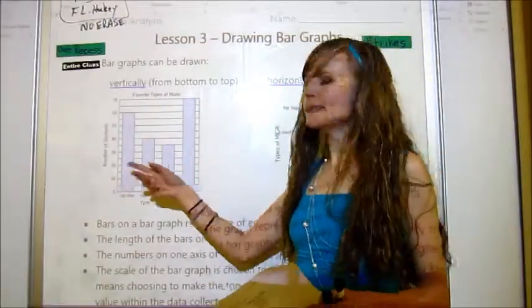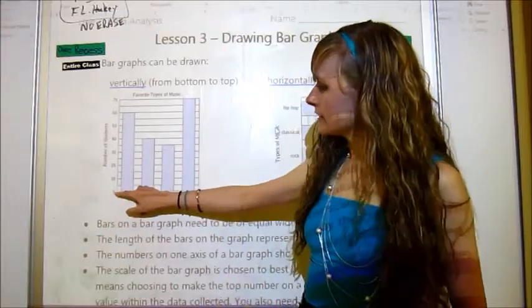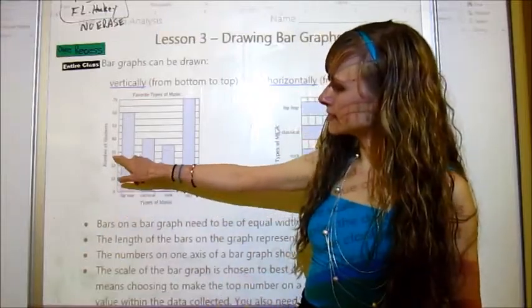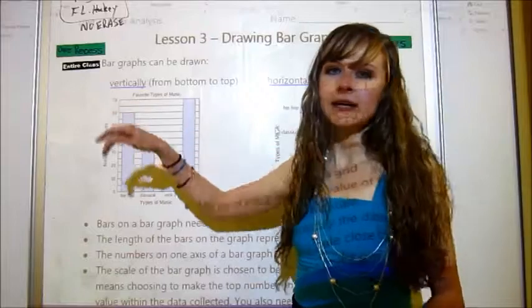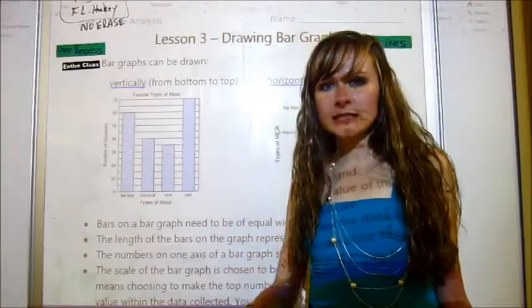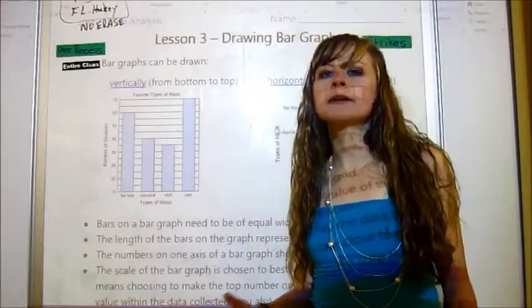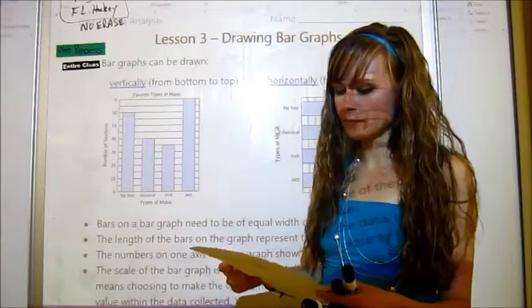But either way, it needs to go up consistently. You can't go, here's zero, one, two, six, 10, 14, 18, 20. That doesn't make any sense. We need consistency and it needs to skip count by the same amount each time.